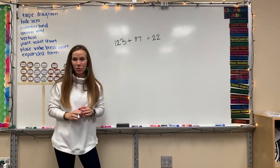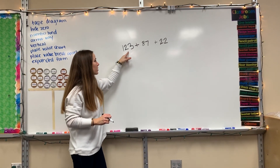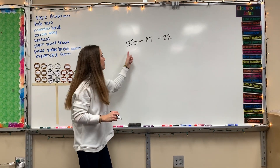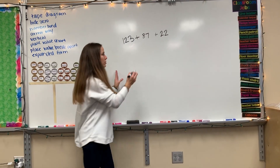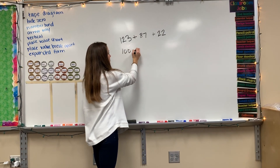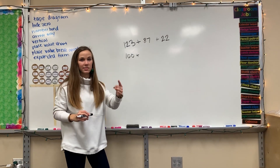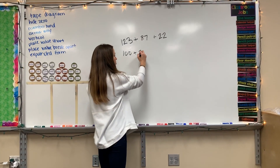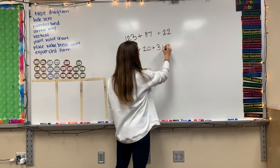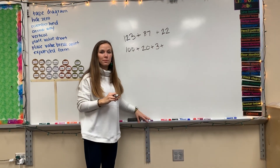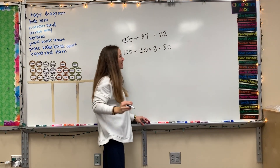Another method is expanded form. That's where you look at each number individually and see what the number in each place value is actually worth. I look at 123: the 1 is in the hundreds place, so it's actually worth 100. The 2 is in the tens place, so I have two tens — that's worth 20. My 3 is in the ones place, so it's worth just 3. Then for 87: the 8 is in the tens place, so 8 tens is worth 80. The 7 is in the ones place, so that's worth just 7.